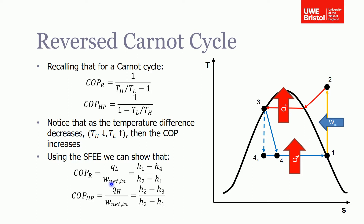The net work done is the enthalpy change between states 2 and 1, so we can work out the coefficient of performance as a function of these enthalpies. For a heat pump, the desired output is the heat delivered to the environment, so it's the enthalpy change between states 2 and 3, over the same net work done between states 2 and 1. These are slightly different depending on which application you're analyzing.